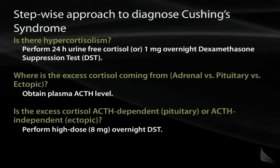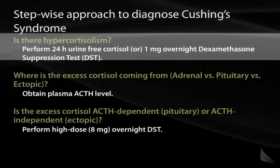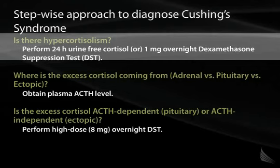The first step is to ask: is there hypercortisolism or Cushing syndrome? The best test is a 24-hour urine free cortisol. You don't want a random plasma cortisol because of diurnal variation and pulsatile secretion. The 24-hour urine cortisol gives an integrated measure over a 24-hour period to determine whether there is a high-cortisol state.